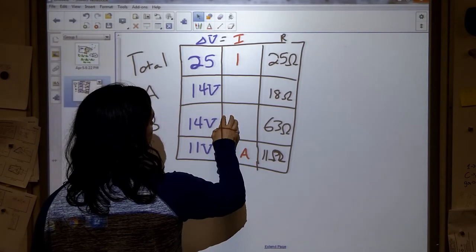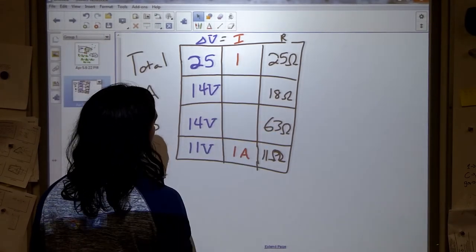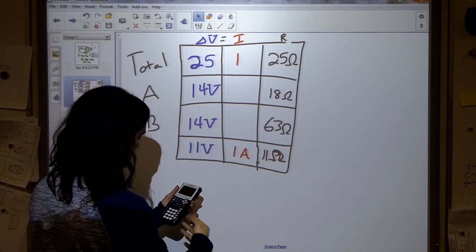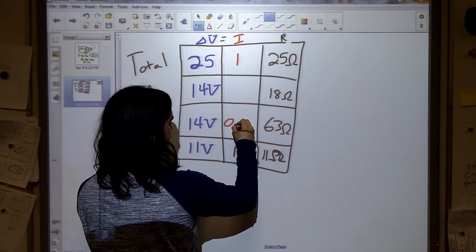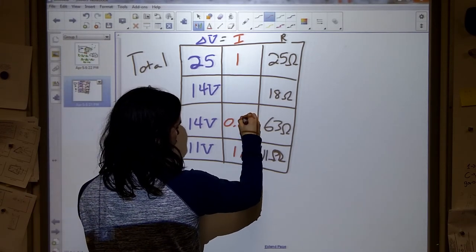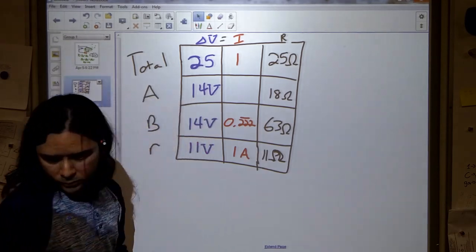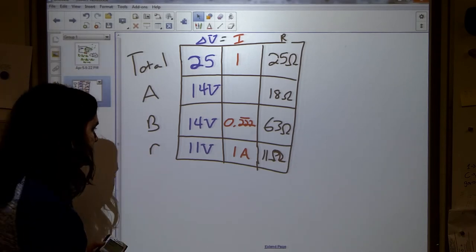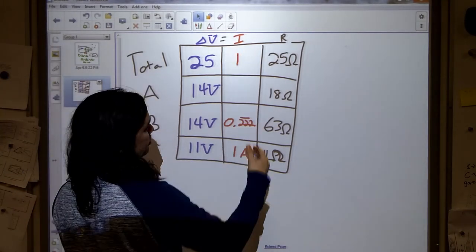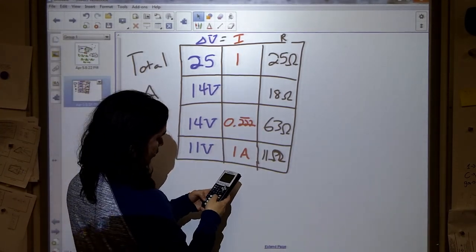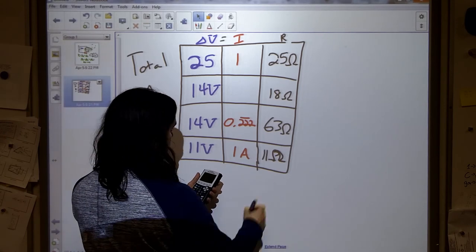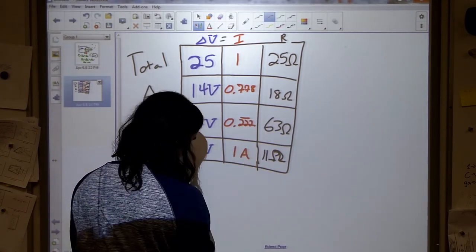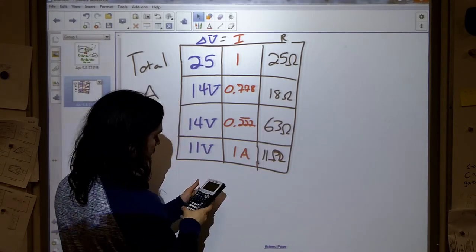So 14 volts equals our current through B times 63 ohm, so I'm going to take 14 divided by 63, and we end up with, interesting, 0.222 repeating. That should be our answer. Let's double check, and that is what they have listed, so there we go. And for completeness, because it's only one more step, 14 divided by 18, 0.778. Basically 777777, but that's fine.